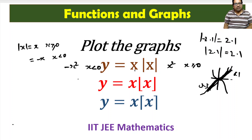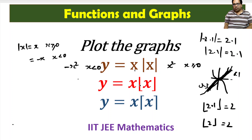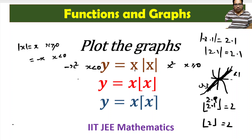Next: y equals x times floor of x. Floor of x rounds any number down to the nearest integer less than or equal to it. For example, floor of 2.1 equals 2, floor of 2 equals 2, floor of 2.9 is also 2, and floor of 2.99 is also 2. But floor of 3 is 3. It gives the integer part below the number.